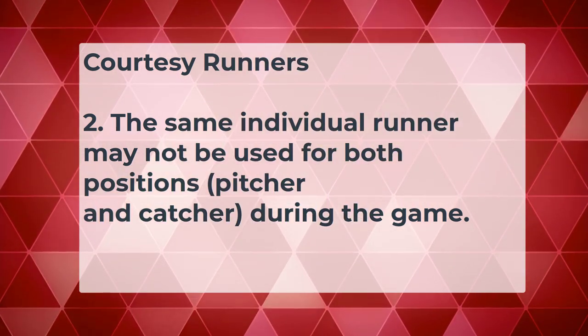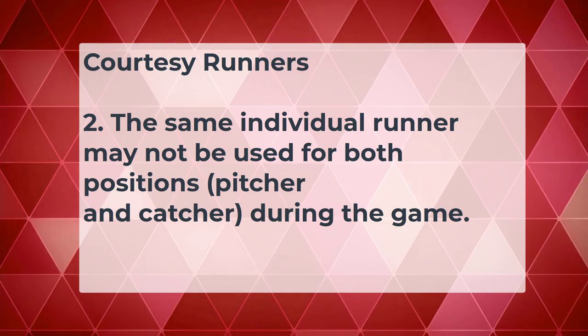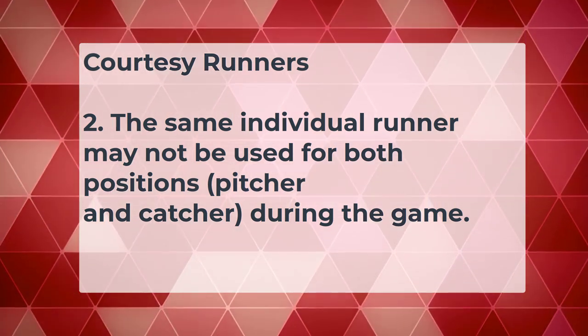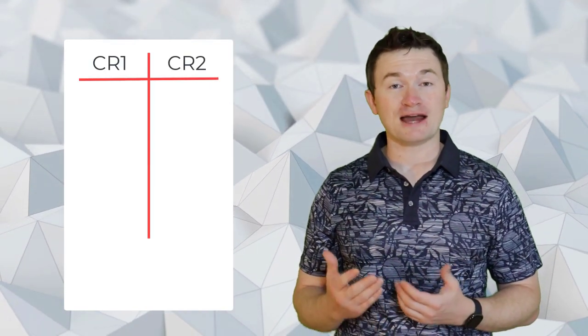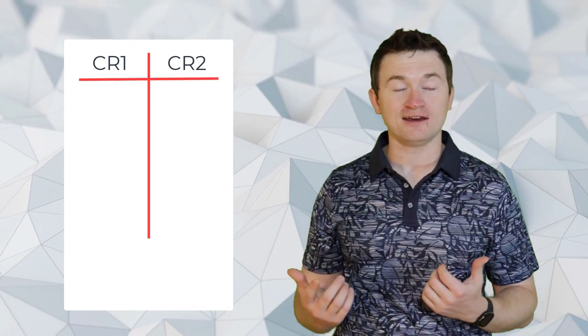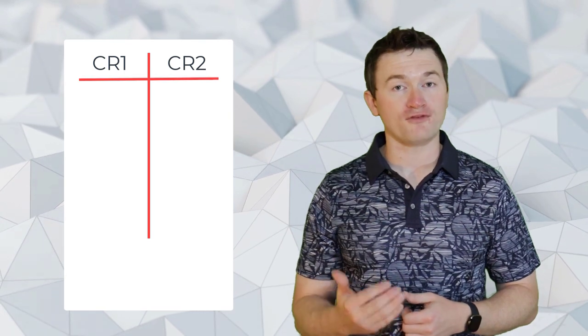Rule two: the same individual runner may not be used for both positions — pitcher and catcher — during the game. First, an individual courtesy runner can only run for the catcher or for the pitcher, but not both. That's why on my lineup card I make a table with CR1 and CR2 separated, so I can track who courtesy runners have run for. The second point is that the courtesy runner runs for a position, not for a player.